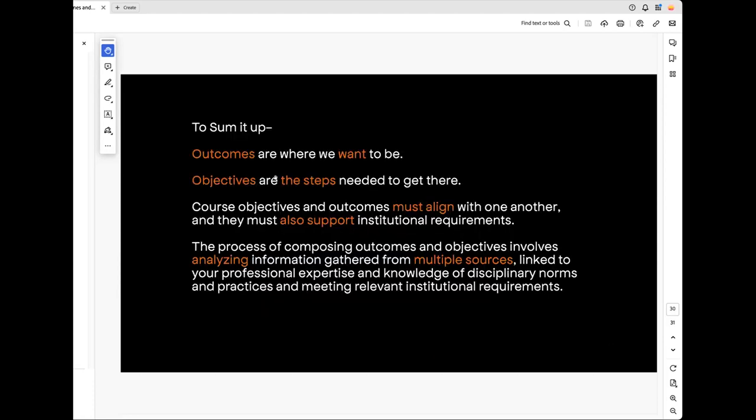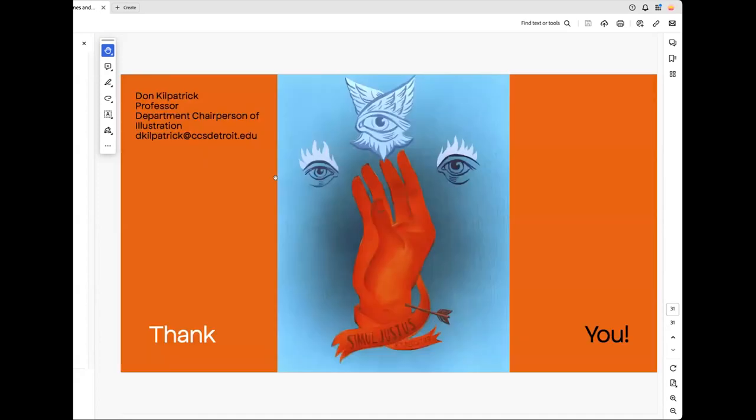So there you go. Sum it up. I know I've gone long here. Outcomes are where we want to be. Objectives are the steps to get there. Course objectives and outcomes must align and also support institutional requirements. And the process of composing outcomes and objectives involves analyzing from multiple sources, taking all that research and then writing them. And thank you very much. I appreciate taking the time. I told you I was going to go long, but at least I got in a little bit over 15. So thank you so much, everybody.